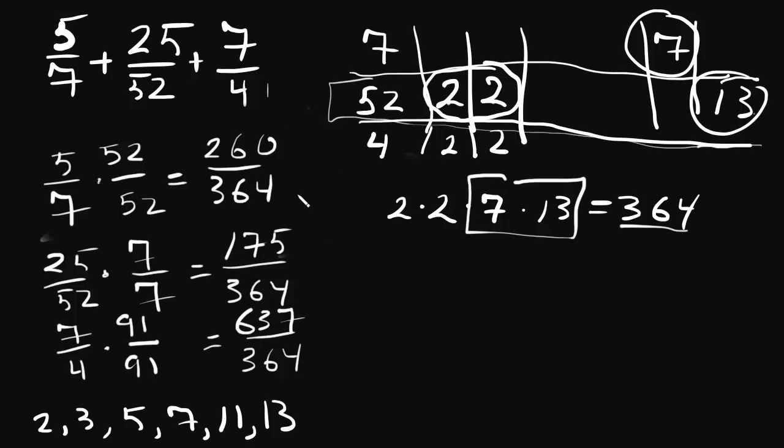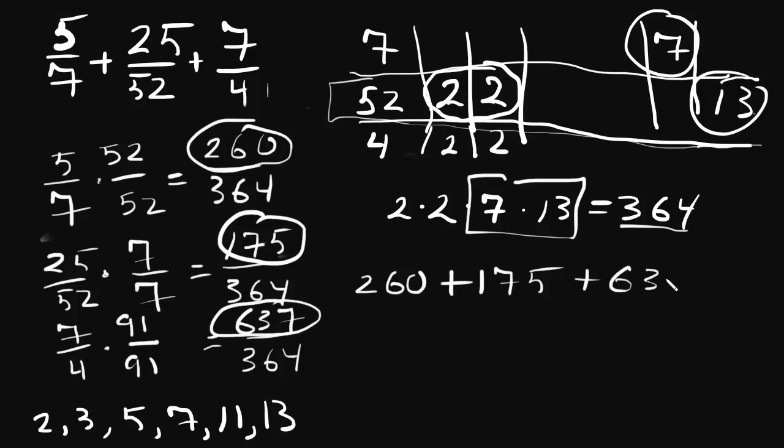Now, when we add them all together, our 260 plus 175 plus 637, all of them over 364. The total is going to be 1072 over 364.